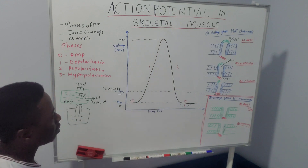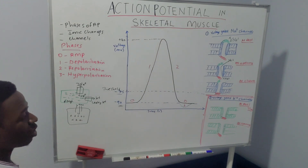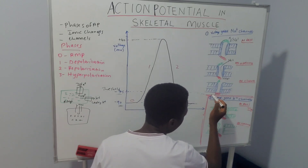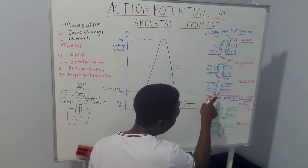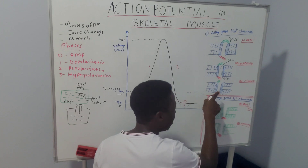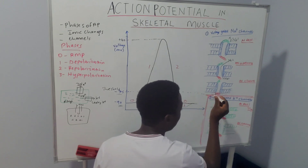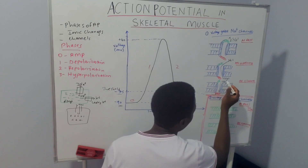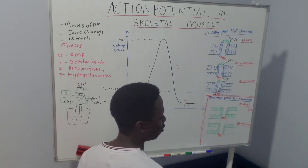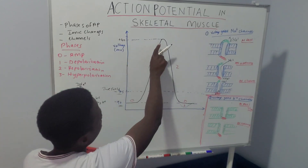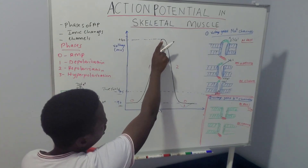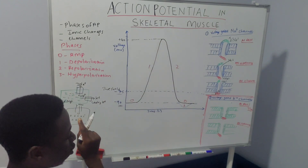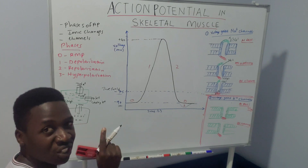At the peak of the action potential, this causes closure of the voltage-gated sodium channels. The closure is due to the closure of the inactivation gate — the inner gate of the voltage-gated sodium channel closes. So we cannot have any more sodium coming into the membrane; sodium entry is blocked. After the closure of the voltage-gated sodium channels, this causes opening of the voltage-gated potassium channels.